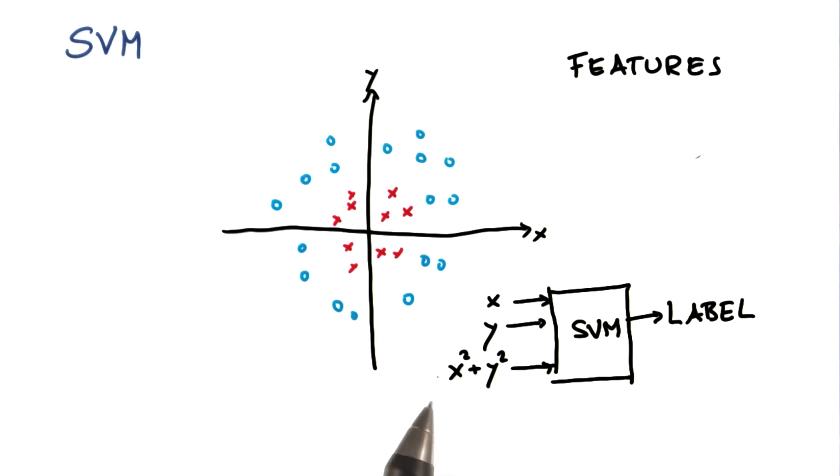But I can convince you that it's easy to compute x squared plus y squared from x and y. So now I have a three-dimensional input space, which is hard to draw over here. And I can run the exact same algorithm on these three features that I previously ran on the two features.